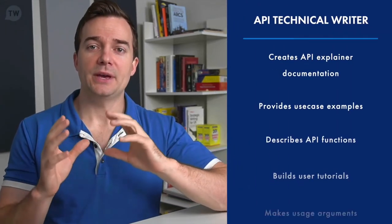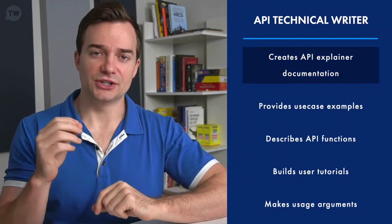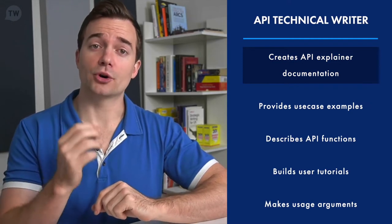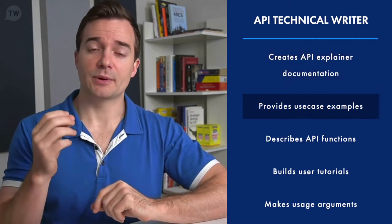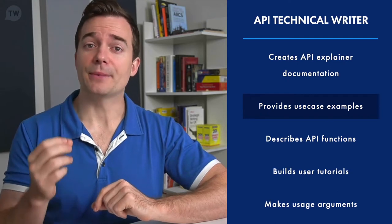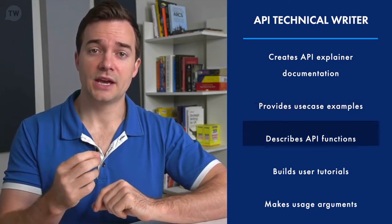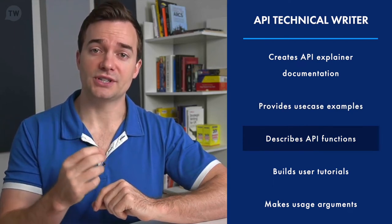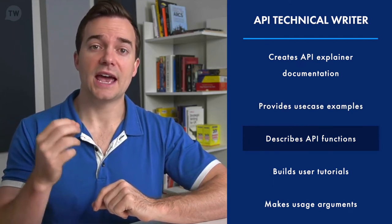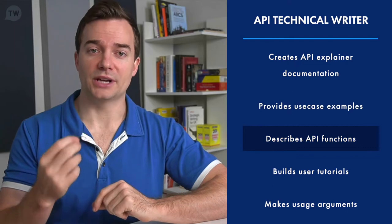So what exactly is an API technical writer? An API technical writer creates documentation that explains how an application programming interface or API works. They provide use case examples to describe the most effective ways to use the interface and provide in-depth descriptions of the API's functions and how it interacts with the application.